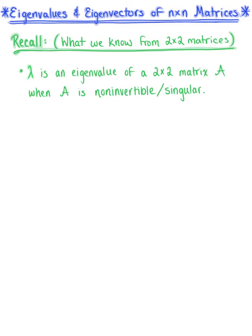We know that lambda is an eigenvalue of matrix A when matrix A is non-invertible or singular. This is true when the determinant of A minus lambda times the identity matrix equals 0.